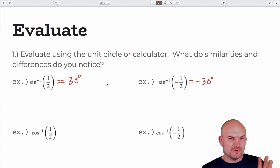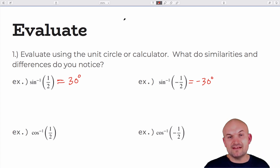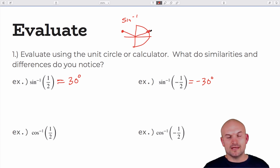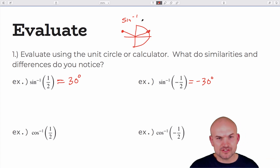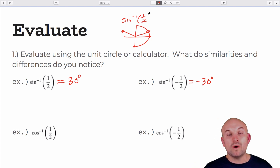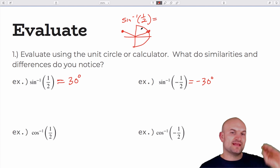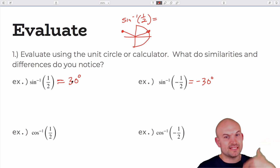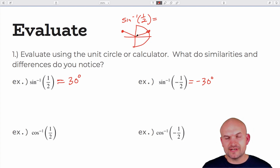Remember, the sine inverse function is restricted to the first and fourth quadrants. Sine equals one half in two places, but you can't have two answers when evaluating the inverse — it's a function. That's why it's restricted between negative 90 and positive 90 degrees, giving only 30 degrees as the answer, not the other location. Similarly, negative 30 degrees meets the restriction, while 210 degrees does not.